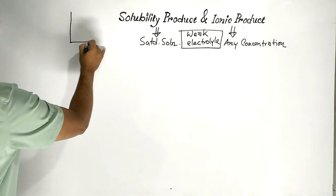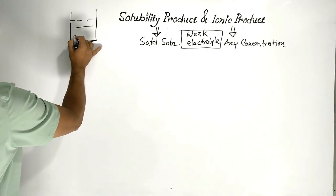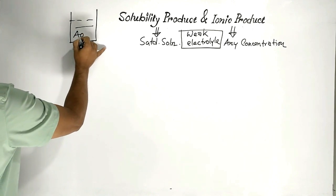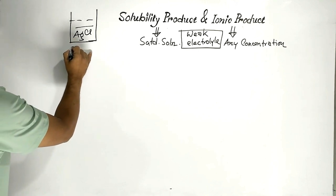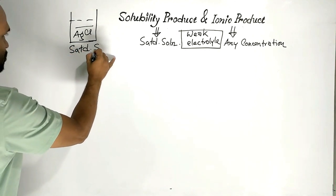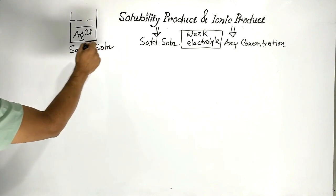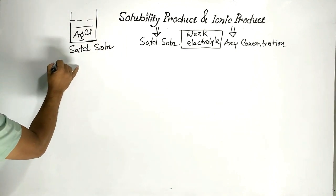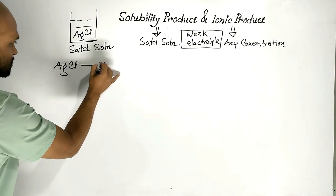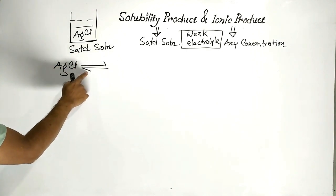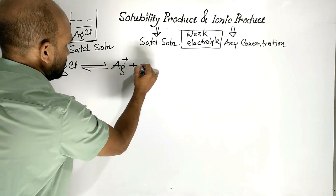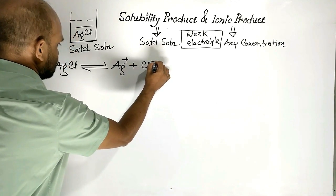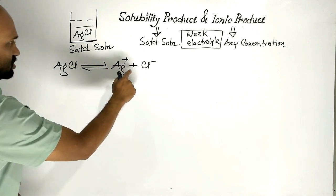Suppose this is a saturated solution of silver chloride. Silver chloride is a kind of sparingly soluble salt — a kind of weak electrolyte. As this is a weak electrolyte, it establishes an equilibrium state with its ions: silver ion and chloride ion. This is a kind of reversible process.